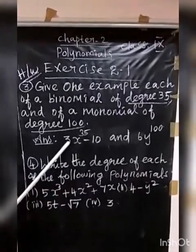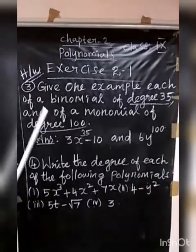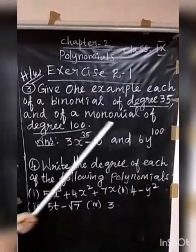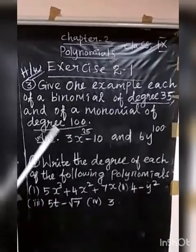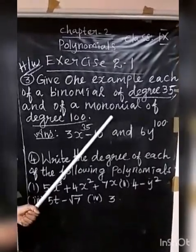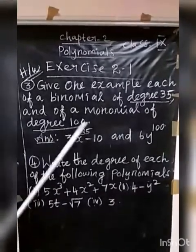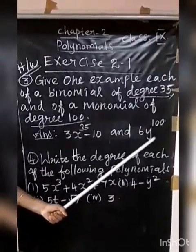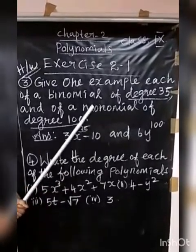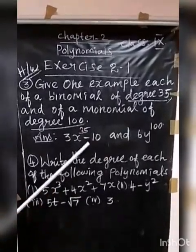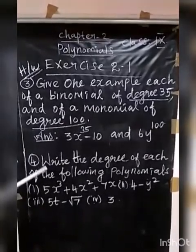So 3X Power 35 Minus 10 is a binomial of degree 35. A monomial has only 1 term. For a monomial of degree 100, you can write 6Y Power 100. You can write more such examples as homework.